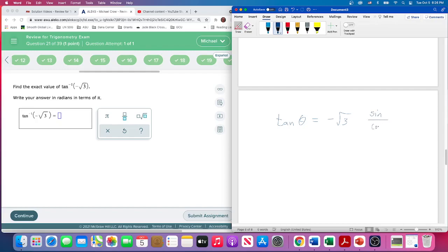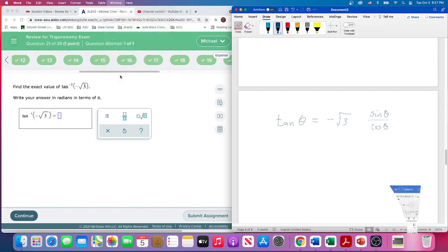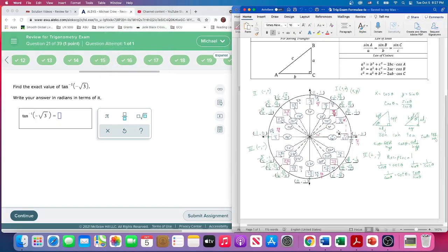Sine over cosine gives us square root of 3, and where do we see the square root of 3 in sine and cosine? Looking at the unit circle here, square root of 3 over 2 is the sine, 1 half is the cosine.